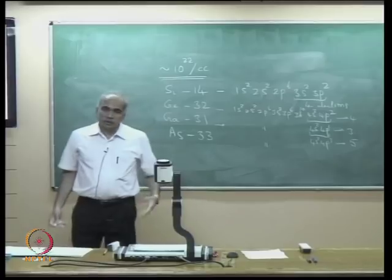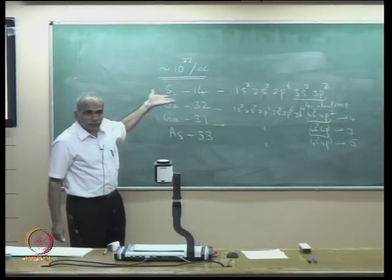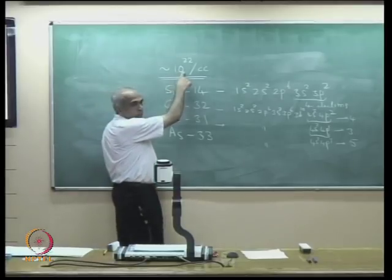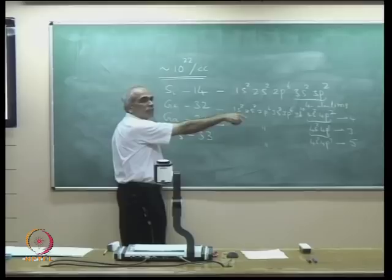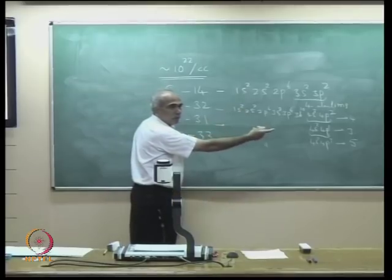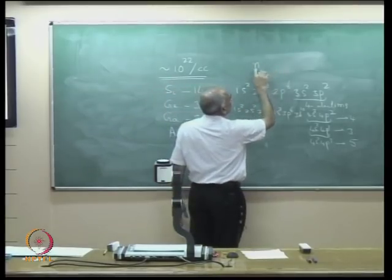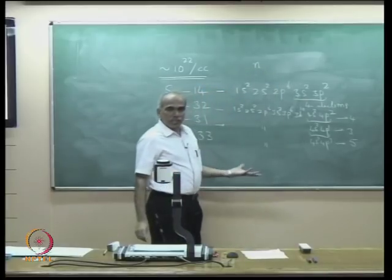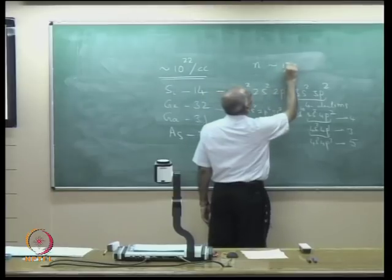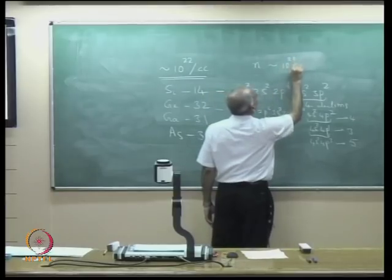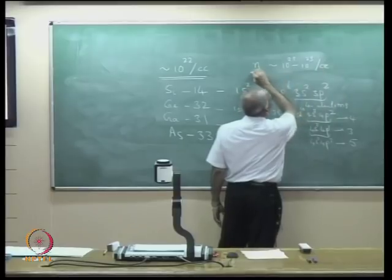In other words, the number of valence electrons per unit volume is the number of atoms per unit volume multiplied by the number of valence electrons per atom, giving n in the range of 10²² to 10²³ per cm³.